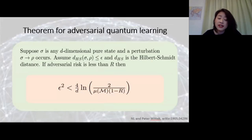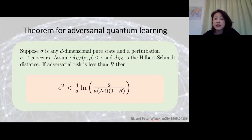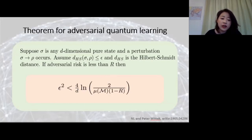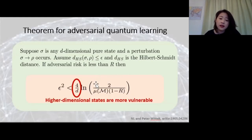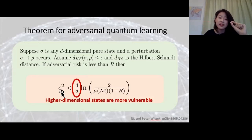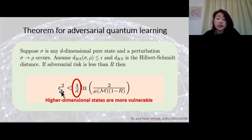So we have our first theorem: suppose sigma is some D-dimensional pure quantum state, selected from SU(D), and a perturbation of sigma to rho occurs with Hilbert-Schmidt distance between sigma and rho below some epsilon. If the adversarial risk is less than R—the amount of misclassification you're willing to tolerate—then epsilon is less than a factor on the right. The key factor to concentrate on is the dimensional dependence: as dimension increases, this epsilon becomes smaller and smaller, meaning as dimension increases, the amount an adversary needs to perturb your original state can be smaller and smaller before inducing a misclassification. It's much easier to induce a misclassification in high dimensions.